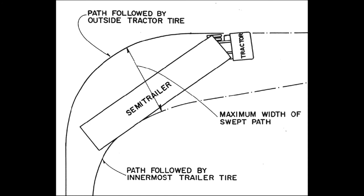Off-tracking is measured as the distance between the path of the inner front wheel and the inner rear wheel. The maximum lane width along the curve is equal to the maximum swept path width, which is equal to the sum of the maximum off-tracking width and the width of the vehicle.